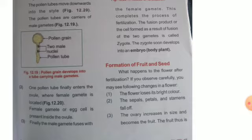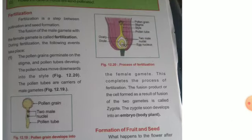When the pollen tube enters the ovule, the female gamete or egg cell is present there. The male gamete that enters fuses with the female gamete, and in this way fertilization is complete. What is formed from this fusion is called a zygote, and after some time the zygote grows and becomes an embryo.